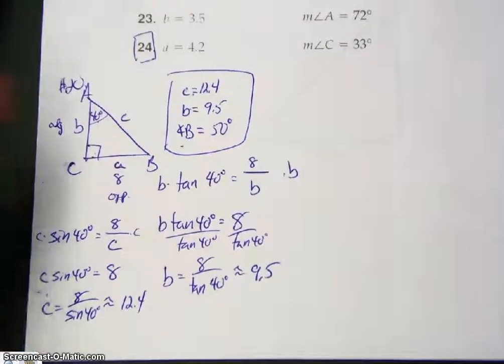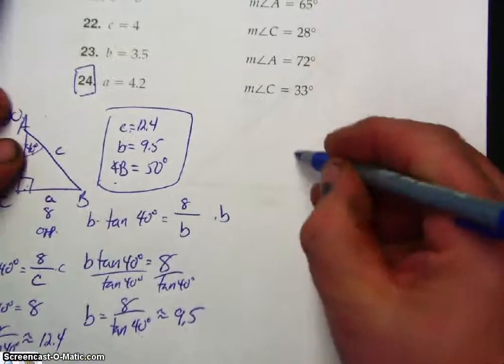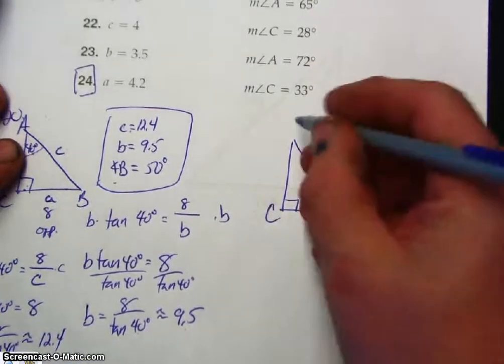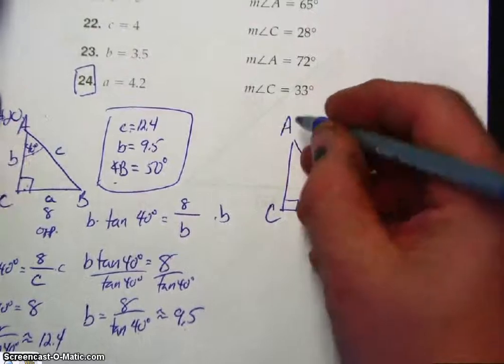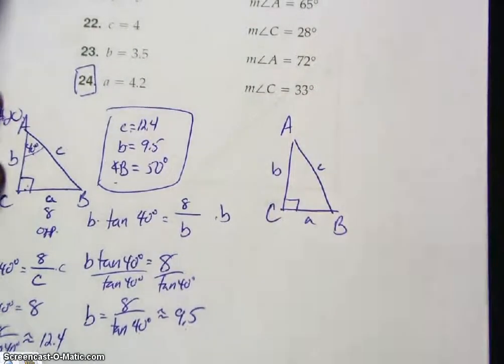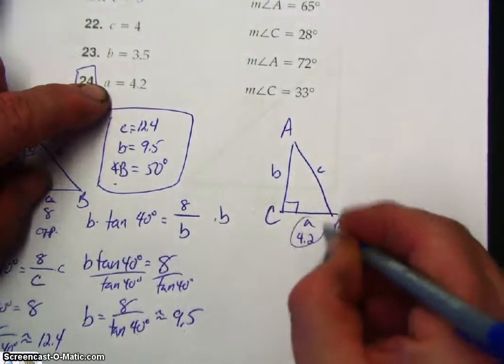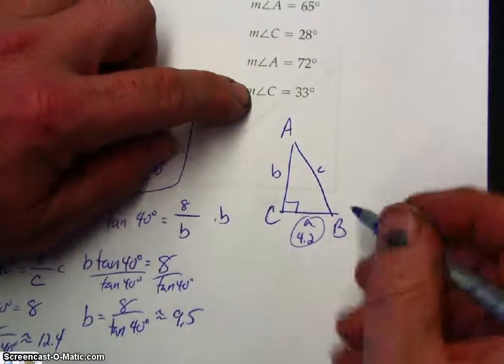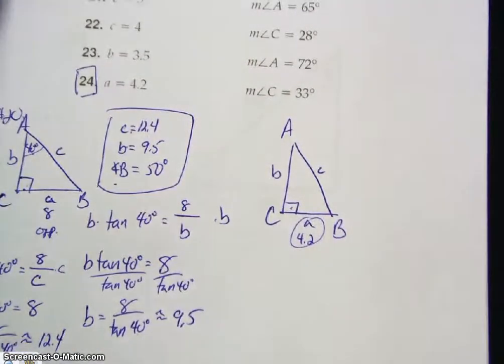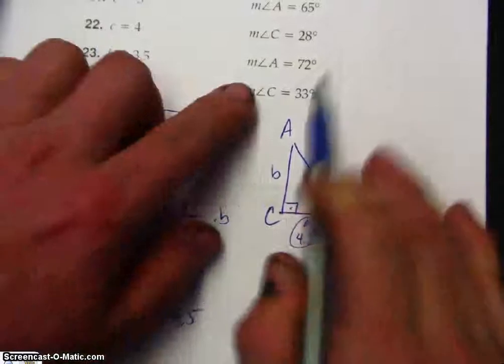All right, 24, you do the same thing. Draw a triangle. So this is angle C, side C. Side angle A, side A. Angle B, side B. A is 4.2, so we're given that. Side angle C. Oh, they threw a curveball at us. Angle C is 33 degrees. It's 90 degrees, so that changes things.